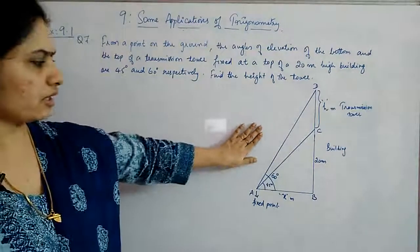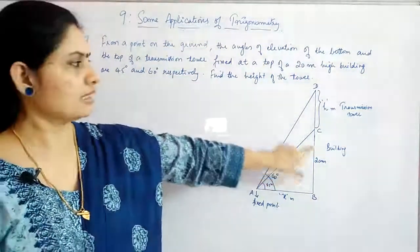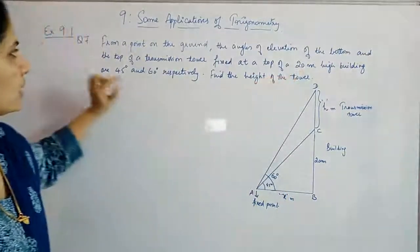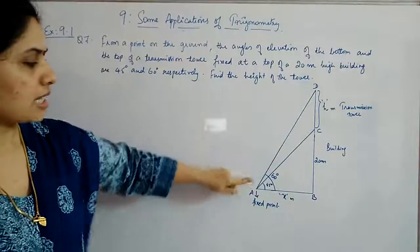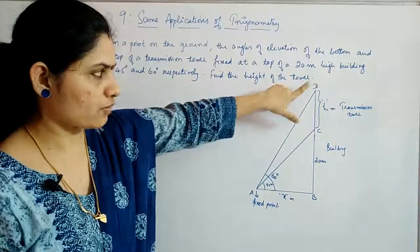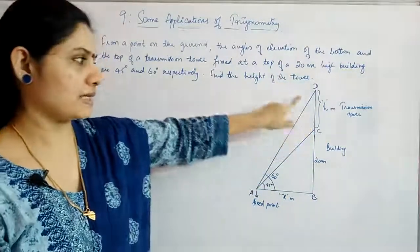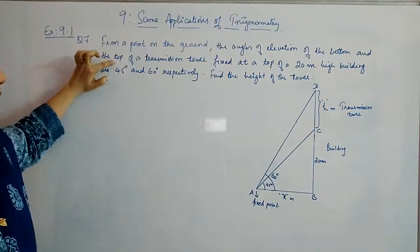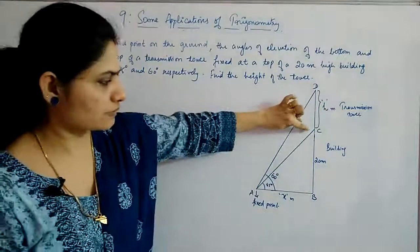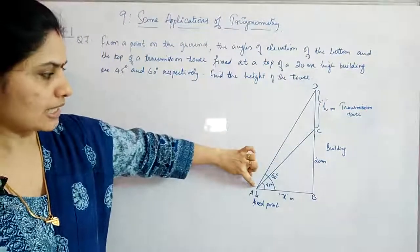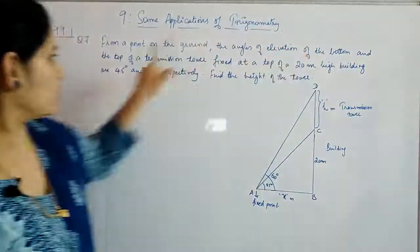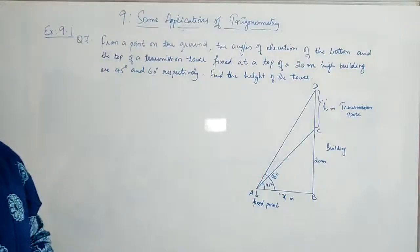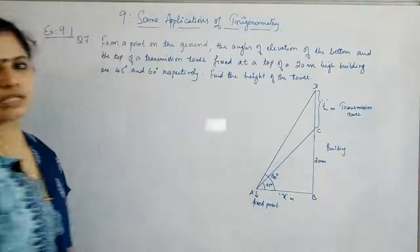A figure is drawn here — this is the building, this is the transmission tower above it, and the building's height is given to be 20 meters. From a point on the ground, the angle of elevation to the bottom of the tower is 45 degrees and the angle of elevation of the top is 60 degrees. Both angles of elevation have been marked, and our purpose is to find the height of the transmission tower.